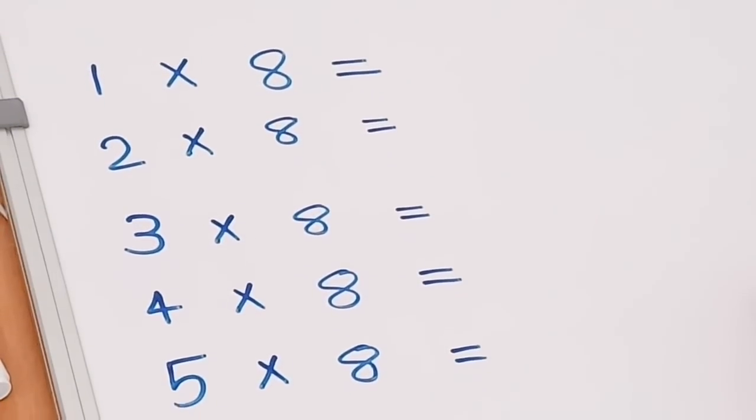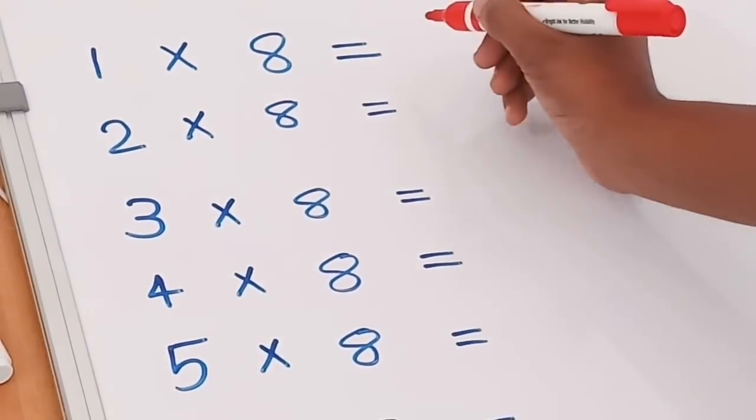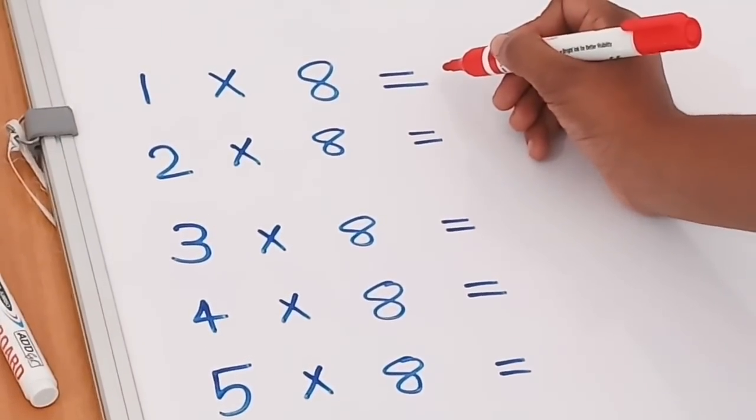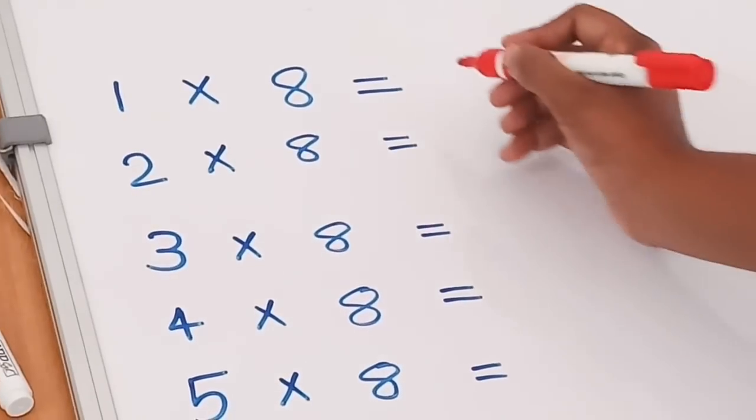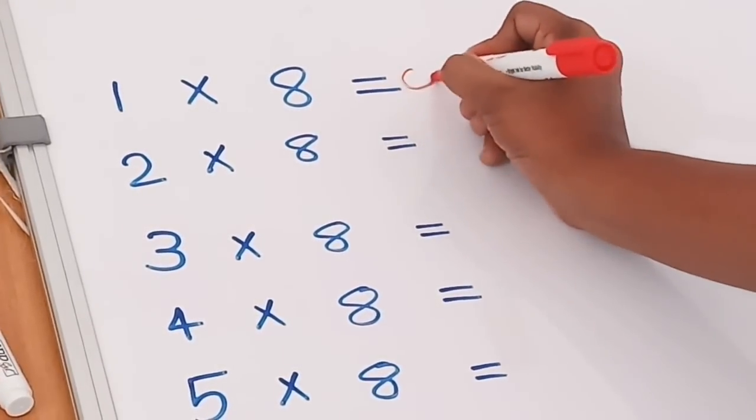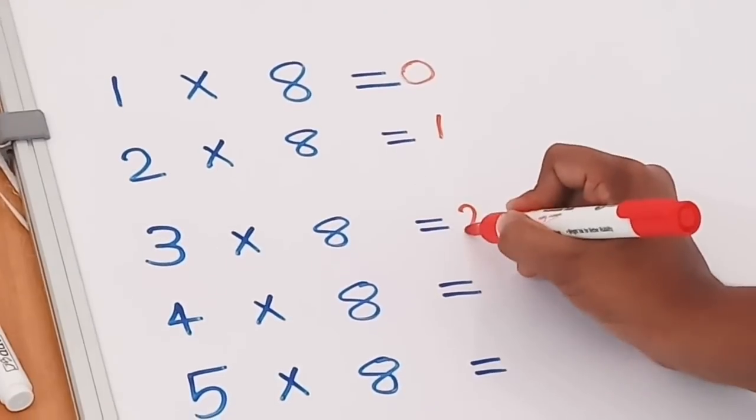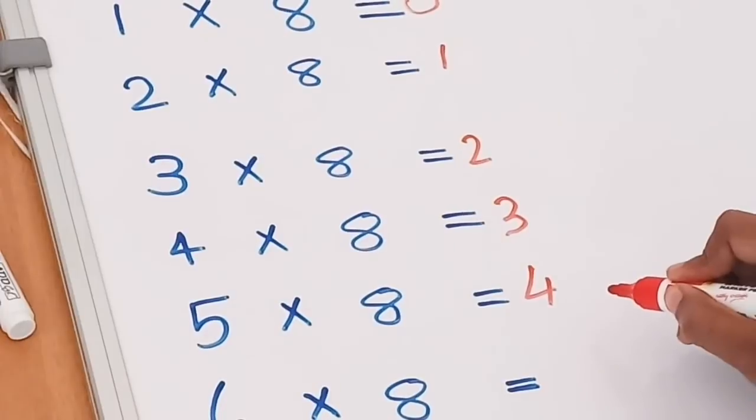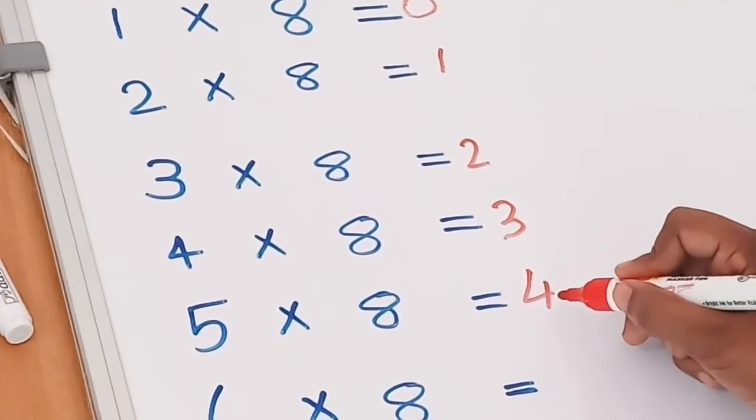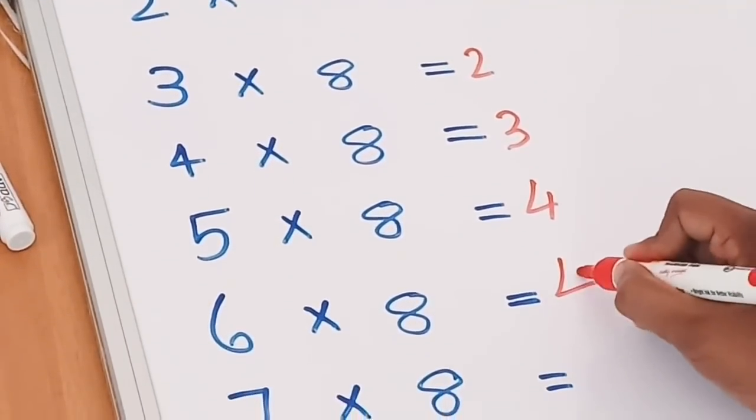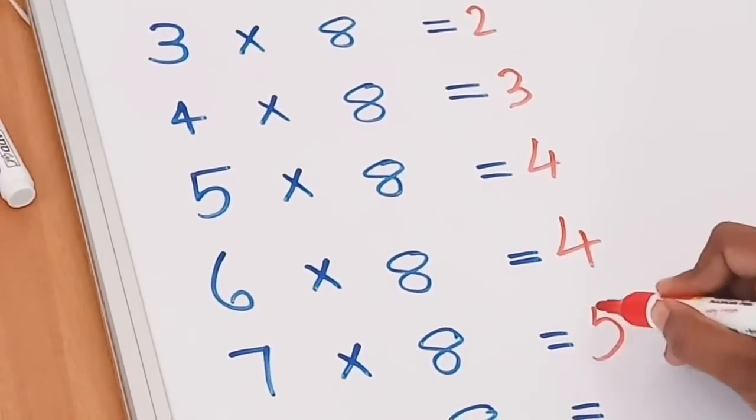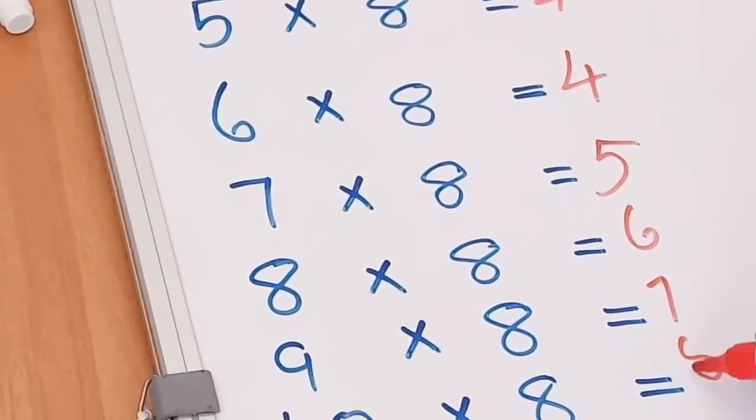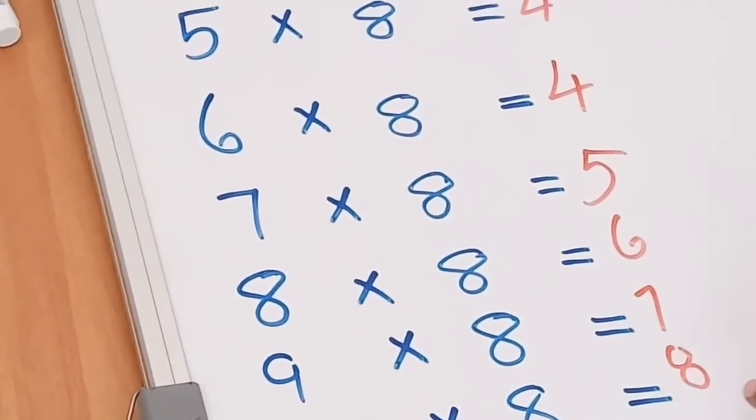In the multiplication table, we will do the 8 times table: 1, 2, 3, 4, 5, 6, 7, 8. The 8 multiplication table equals 8.